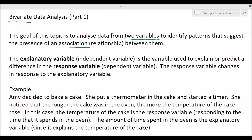If you have two variables, we can break them down into an explanatory variable and a response variable. If you have any kind of science background, you may be more familiar with the terms independent and dependent variables — same thing, we just use different terminology in the General Math syllabus. The explanatory variable is used to explain or predict a difference in the response variable, and the response variable is changing in response to the explanatory variable.